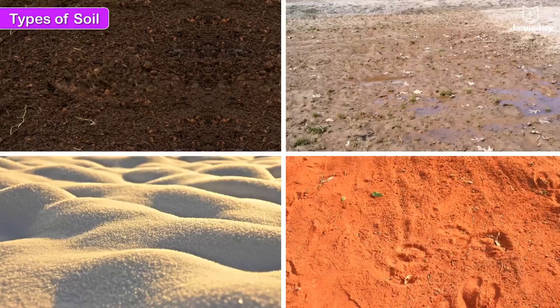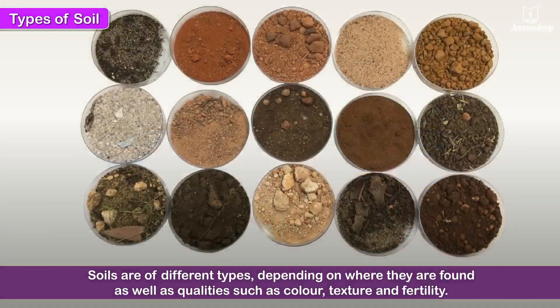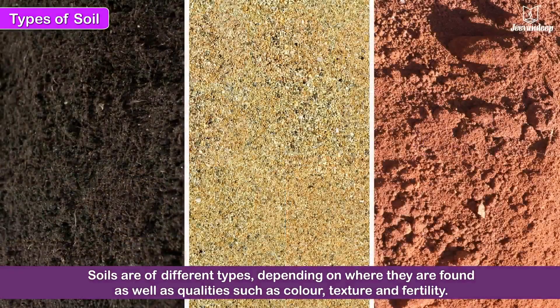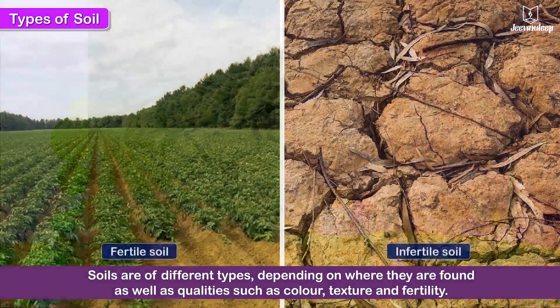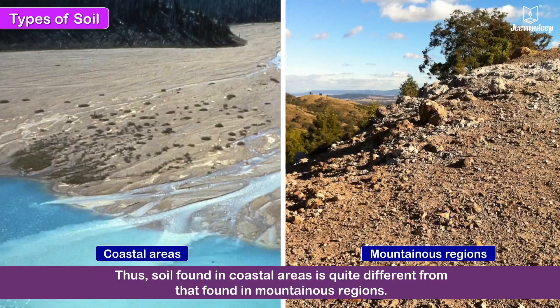Soils are of different types depending on where they are found, as well as qualities such as color, texture and fertility. Thus, soil found in coastal areas is quite different from that found in mountainous regions.